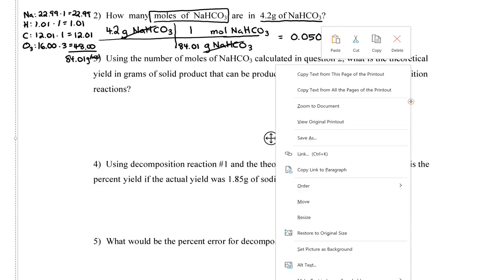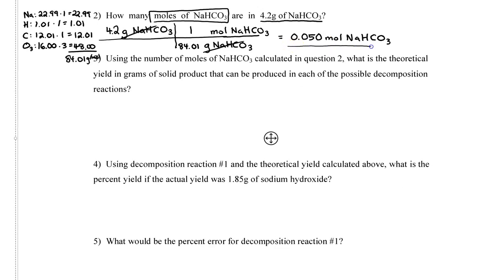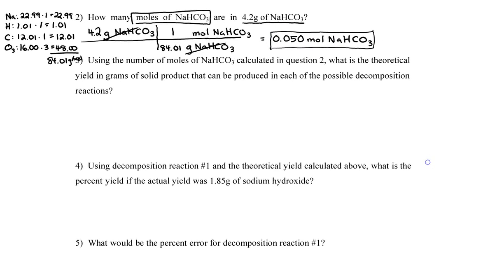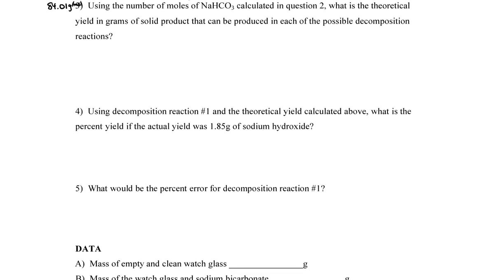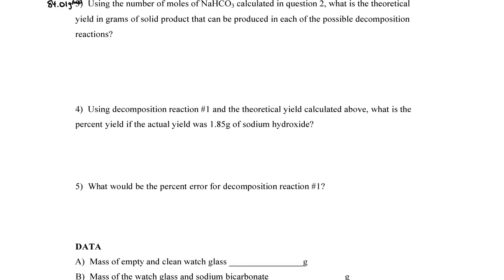So I'm rounding to 0.050 moles of NaHCO3. That's the number of moles. Now number three. It says, using the number of moles of sodium bicarbonate calculated in question two, what is the theoretical yield in grams of solid product that can be produced in each of the possible decomposition reactions? There are two reactions here that I need to worry about. I'm going to start off with reaction number one. My solid product for reaction number one is sodium hydroxide, or NaOH.